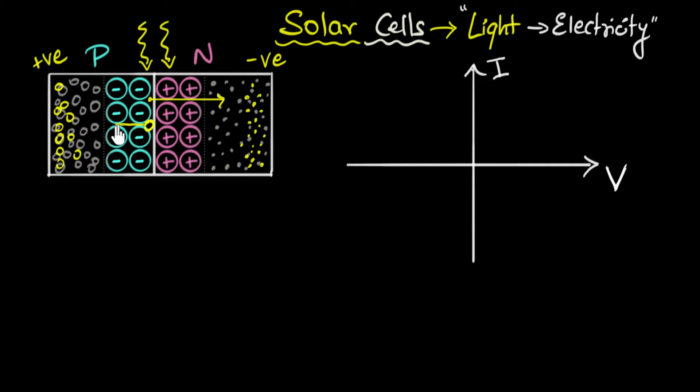Eventually a point is reached where so many holes have accumulated that any new hole trying to cross gets repelled completely and comes back. Similarly, when an electron tries to cross, it gets repelled and turns back. These electron-hole pairs return to the depletion region and recombine, so we reach another equilibrium where electron-hole pairs can no longer be swept and the voltage will no longer increase — we have reached a maximum voltage.